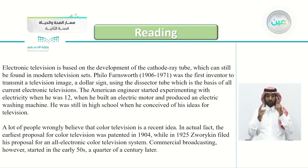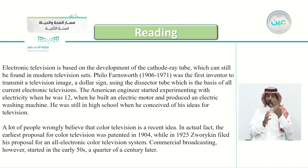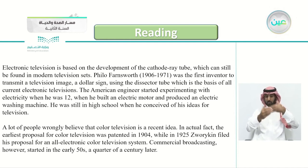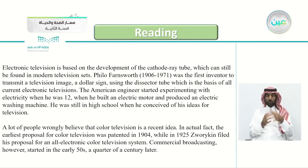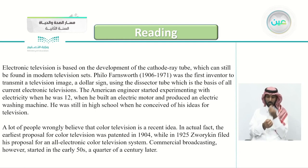Electronic television is based on the development of the cathode ray tube, which can still be found in modern television sets. Philo Farnsworth, 1906 to 1971, was the first inventor to transmit a television image — a dollar sign — using the dissector tube, which is the basis of all current electronic televisions. The American engineer started experimenting with electricity when he was 12, when he built an electric motor and produced an electric washing machine.